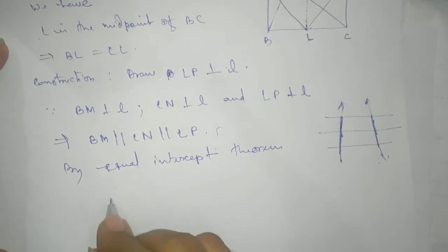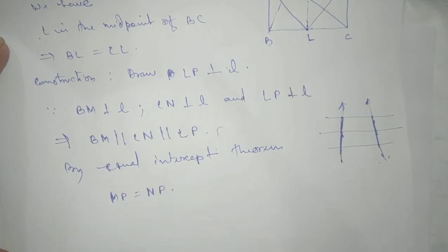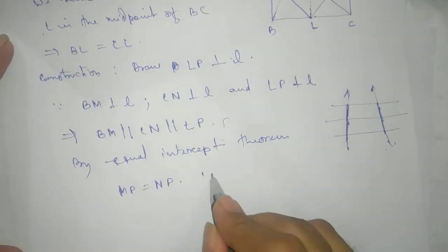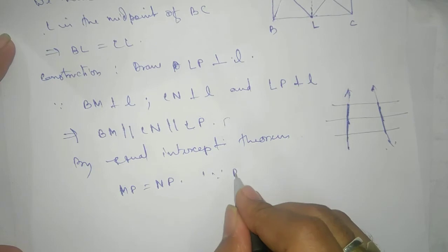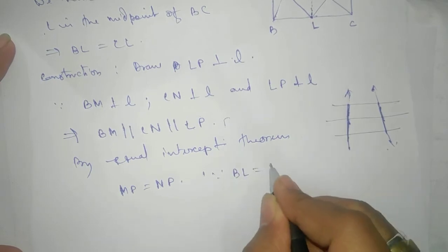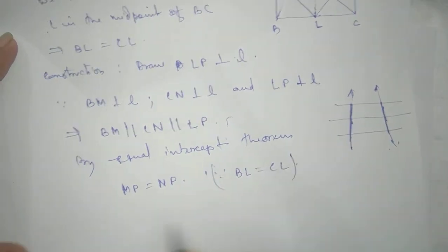By equal intercept theorem we can say that MP equals to NP, since BL equals to CL.